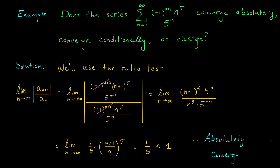Notice that the term 5^n simplified very nicely in our ratio calculation. The ratio test in general does well with a constant raised to the power of n. So if you see something like that, it's a good indicator that the ratio test would work well. In the next example, you'll see another such indicator.